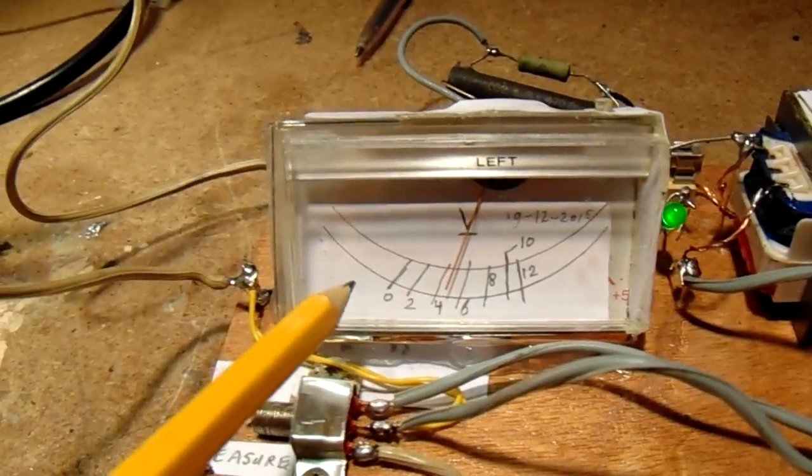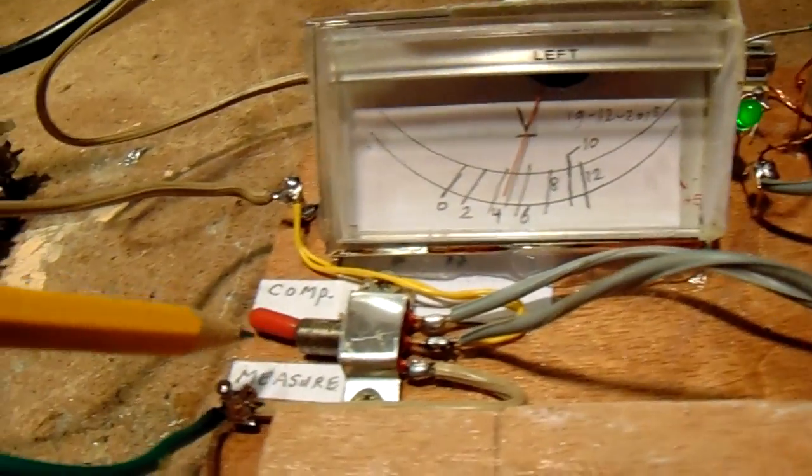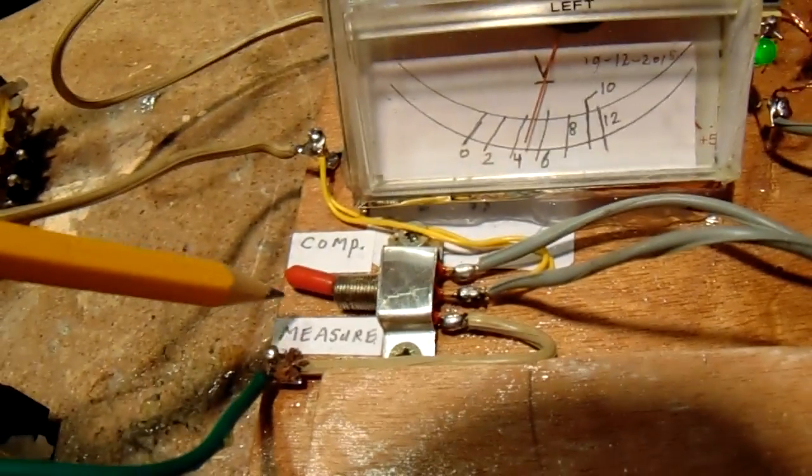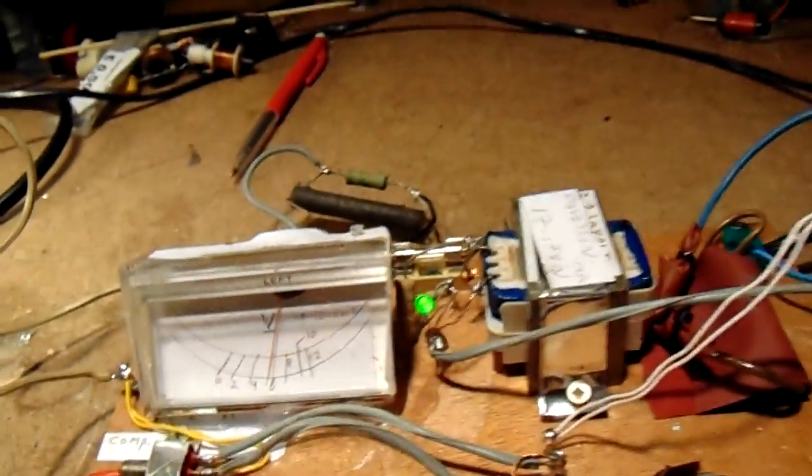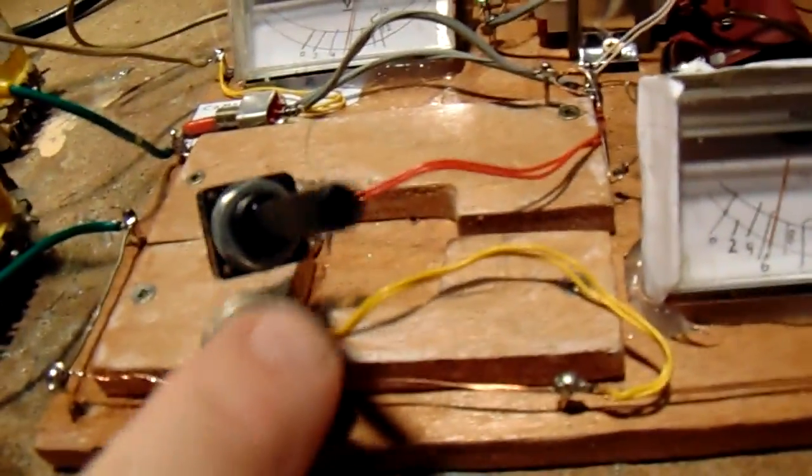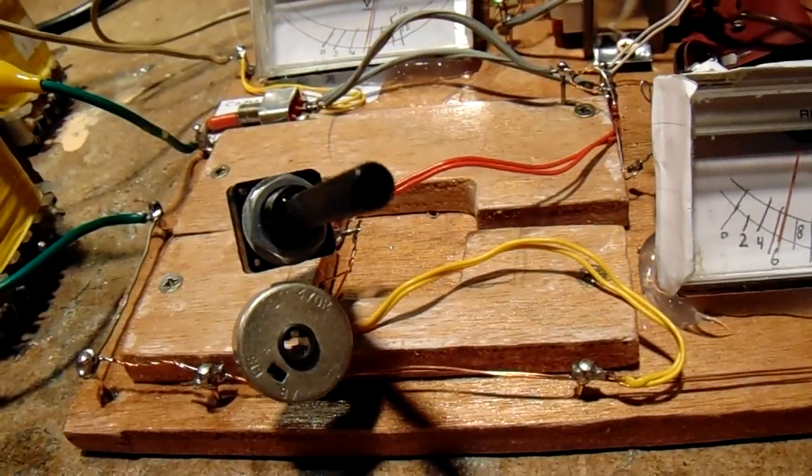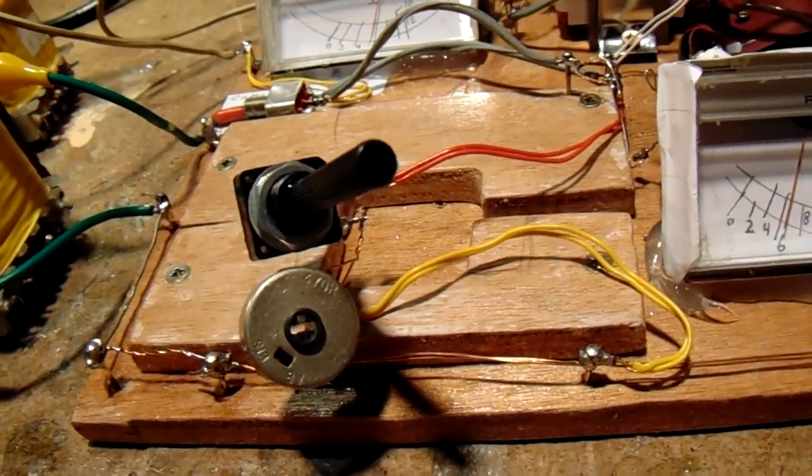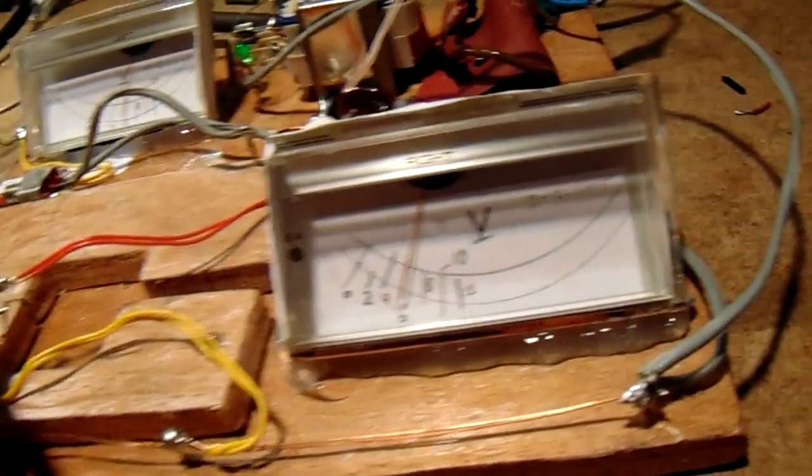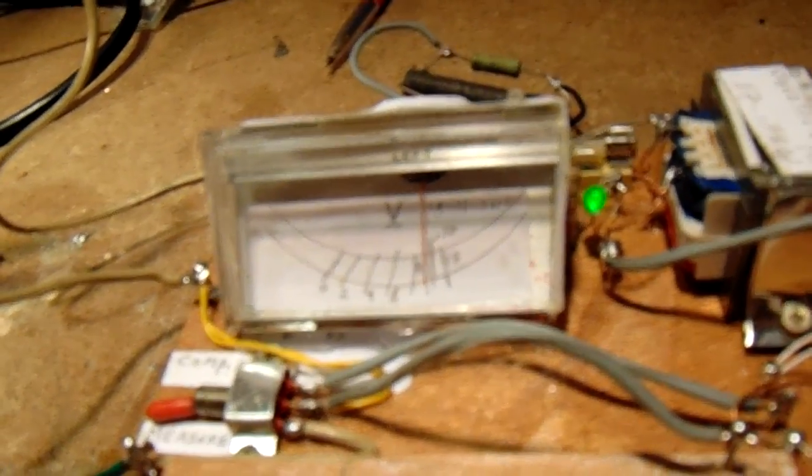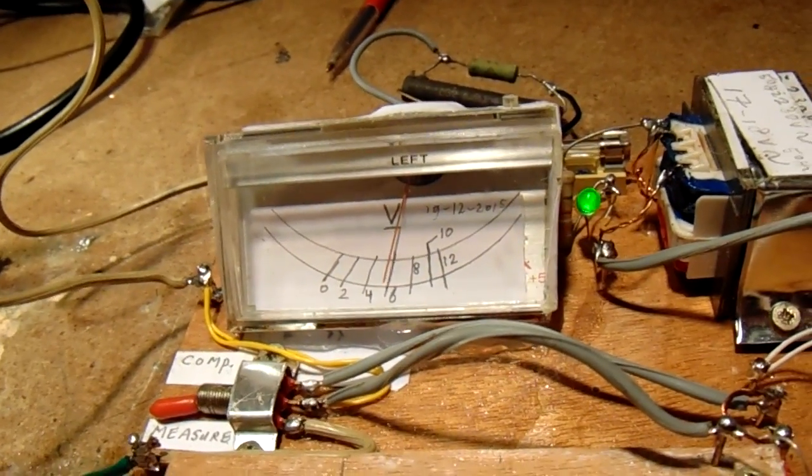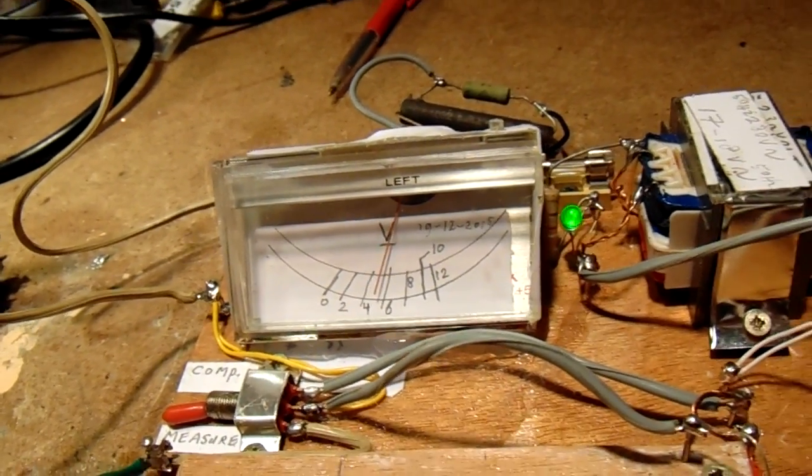Now I switch to the measure position here, and with these two potentiometers I can search for a value where the voltage parallel to both coils is exactly the same.